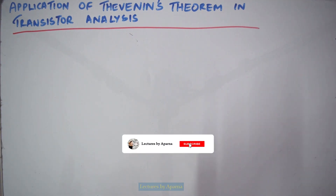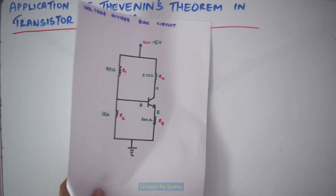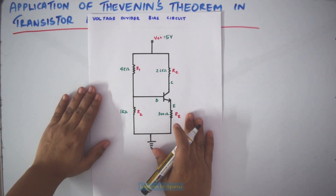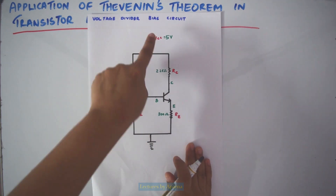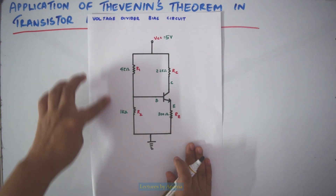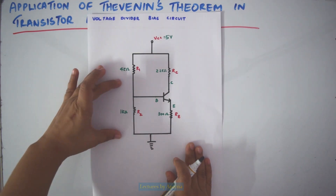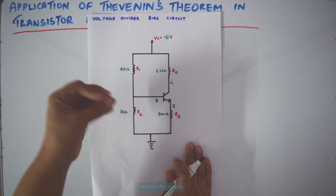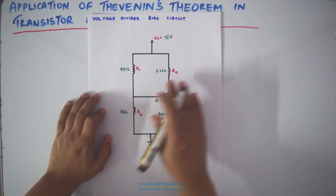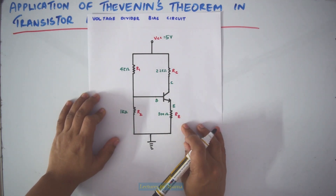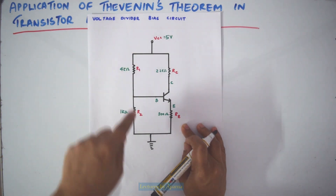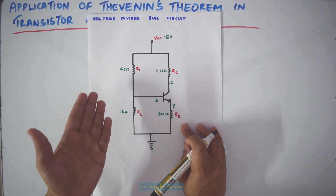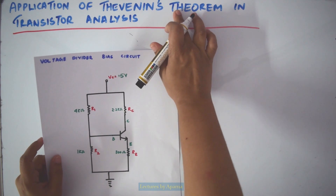Let's consider a voltage divider bias circuit. The input side of this circuit is a little bit complex network compared to the output side. So while we do analysis on this input side, to simplify the analysis we use Thevenin's theorem.